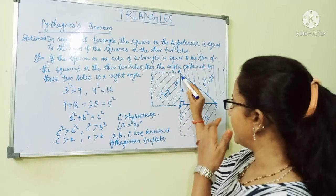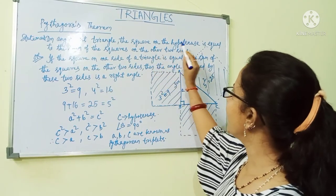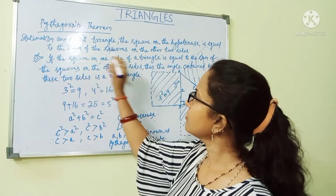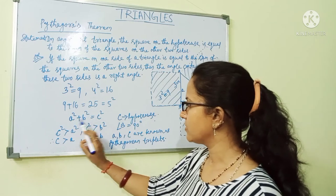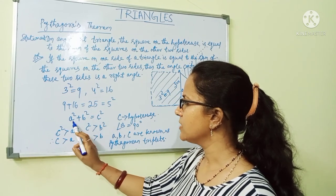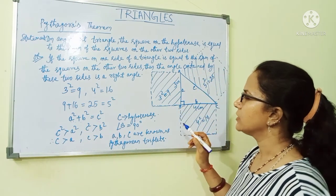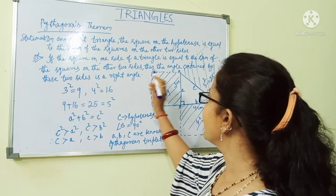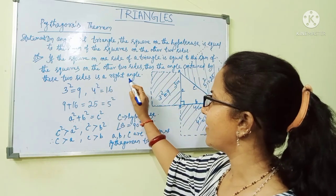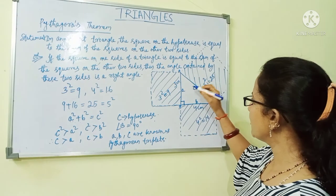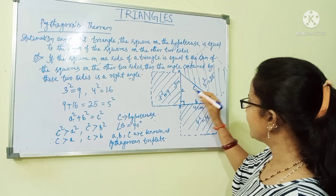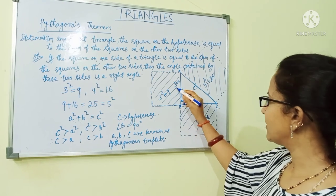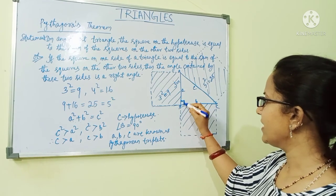In any right triangle, the square on the hypotenuse is equal to the sum of the squares on the other two sides. And if the square on one side of the triangle is equal to the sum of the squares on the other two sides, then the angle contained by those two sides is a right angle. The reverse is also true.